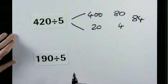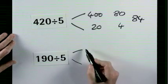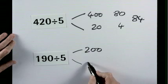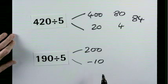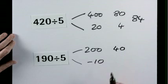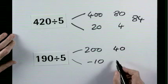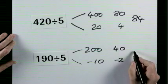190 divide by 5. Why not think of the 190 as 200, take away 10. Divide both by 5. 5 goes into 200, 40 times, and into negative 10, negative 2 times. Combine. 38.